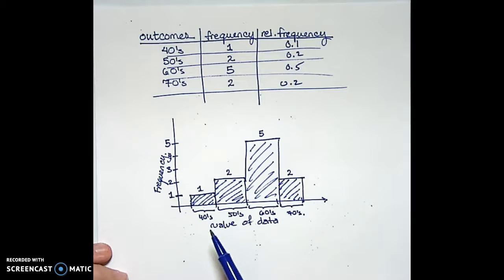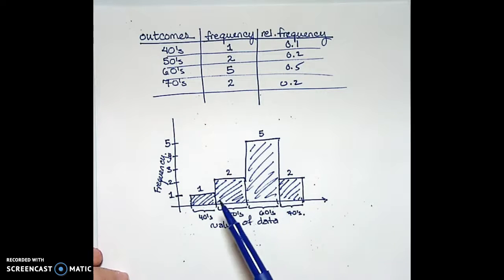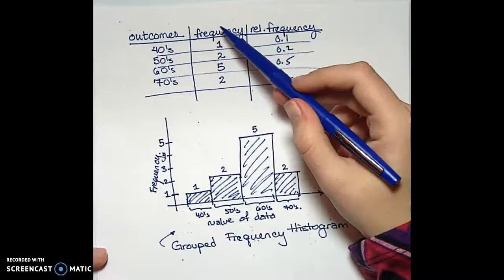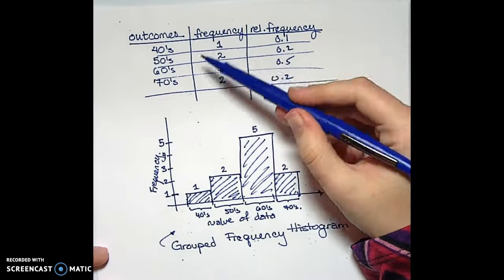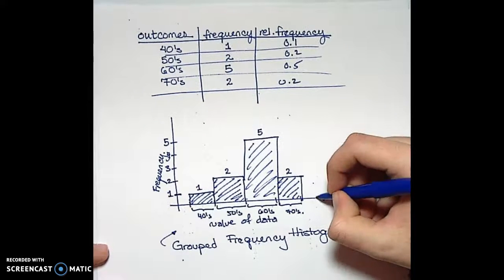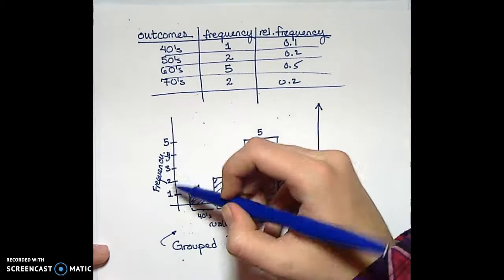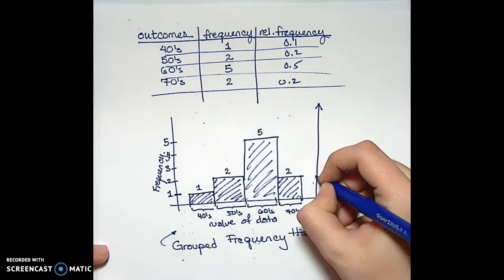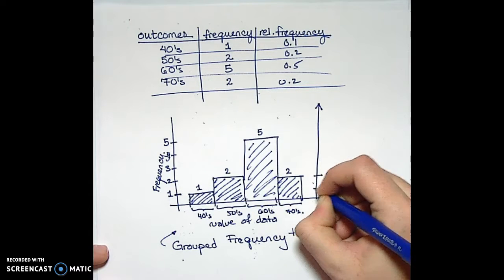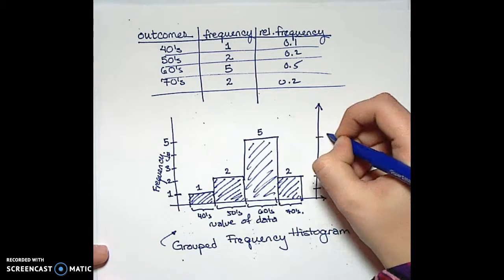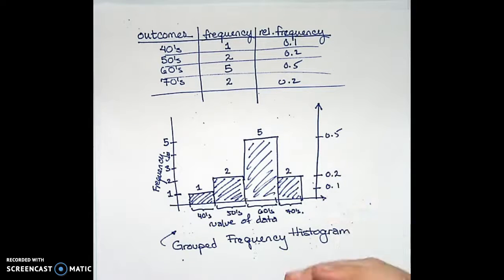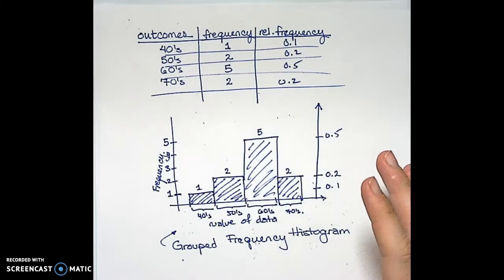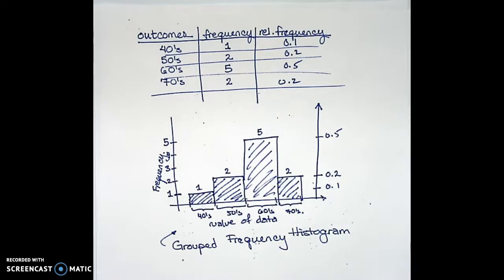We've only been using values from the frequency column, but you could also create a relative frequency histogram. Instead of listing the total number of outcomes, you would list the relative frequency — so this would be 0.1, 0.2, 0.5, and 0.2. So we've seen four different ways to visualize data and create good visualizations, hopefully giving you an idea of how to quickly and efficiently communicate your data set.